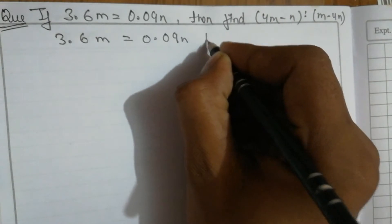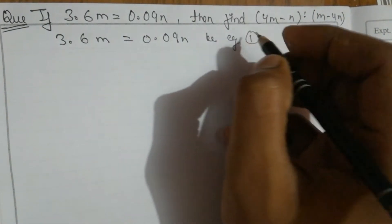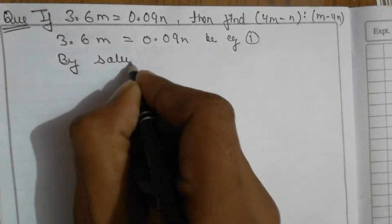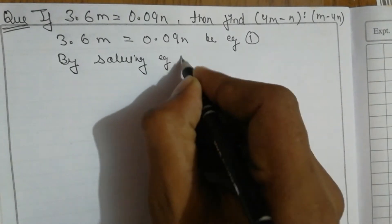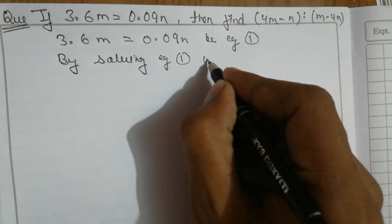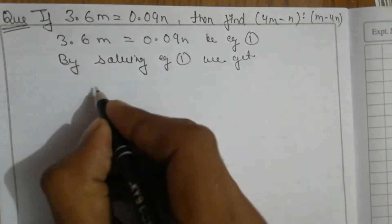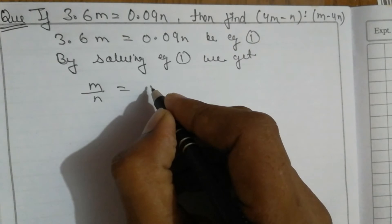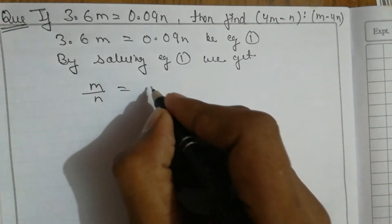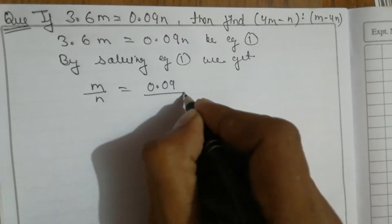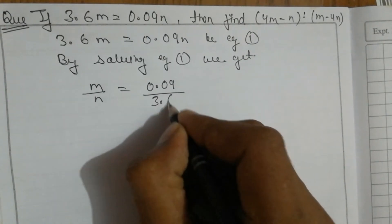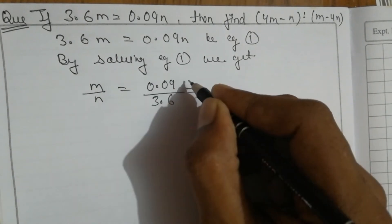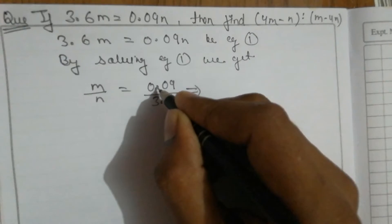As equation 1, then by solving equation 1 we get m divided by n equals 0.09 divided by 3.6. Now we can remove the decimal point and put the zero values. When we remove one decimal